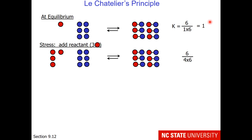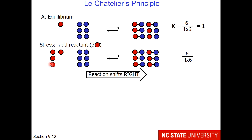Now I'm going to stress this reaction by adding more reactant — I'm going to add 3 red spheres. I've added new material to the reaction, so it's going to have to rebalance itself, because right now the equilibrium constant is not 1, it's 1/4. When I add reactant as a stress, that is like pushing the reaction. I've added to the left side, so I will be pushing the reaction to the right — this means I need to make more product.